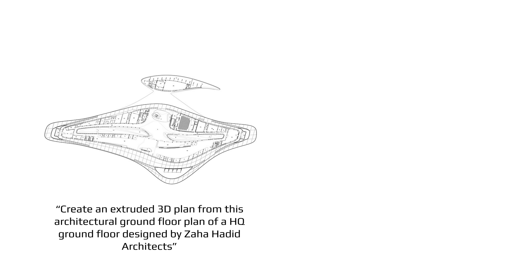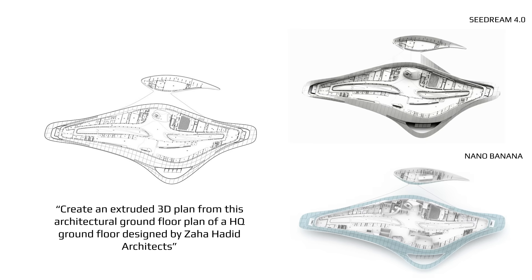Plan to 3D is another interesting AI workflow. I used a complex example as the reference plan and prompted: 'Create an extruded 3D plan from this architectural ground floor plan of an HQ ground floor designed by Zaha Hadid Architects.' Both models followed the outline very well. The main difference is that Nano Banana added color to the cladding, which makes it look amazing, and also added more definition in areas such as the rooms and auditoriums. I have to say Nano Banana does a better job in this instance.